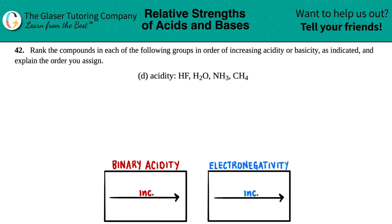Number 42: Rank the compounds in each of the following groups in order of increasing acidity or basicity as indicated, and explain the order you assigned. In this case we have to do increasing acidity, and then they give us four compounds: HF, H2O, NH3, and CH4.